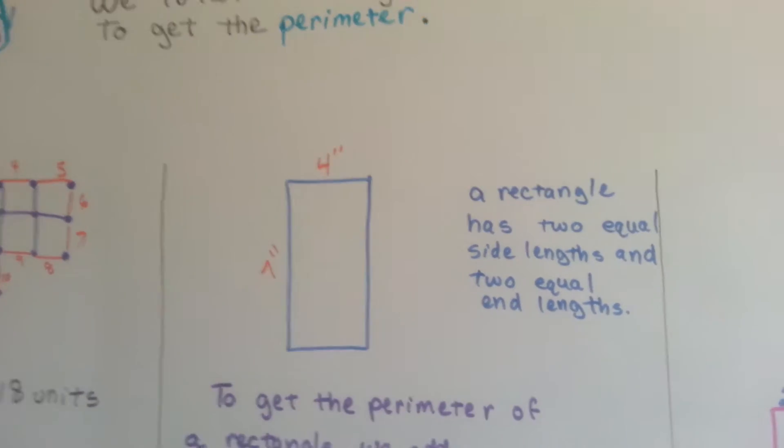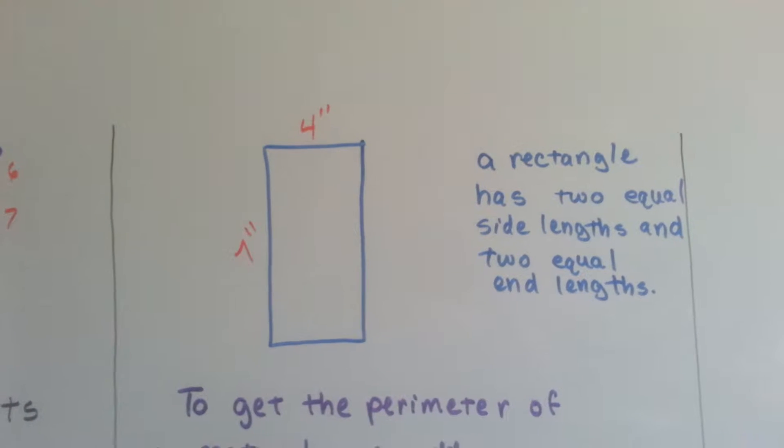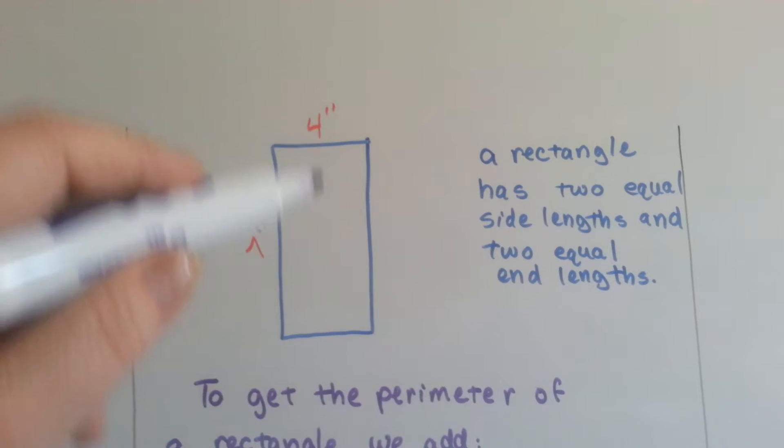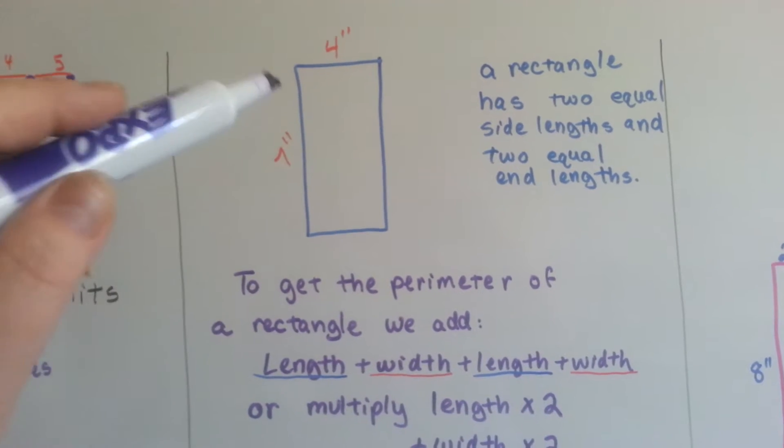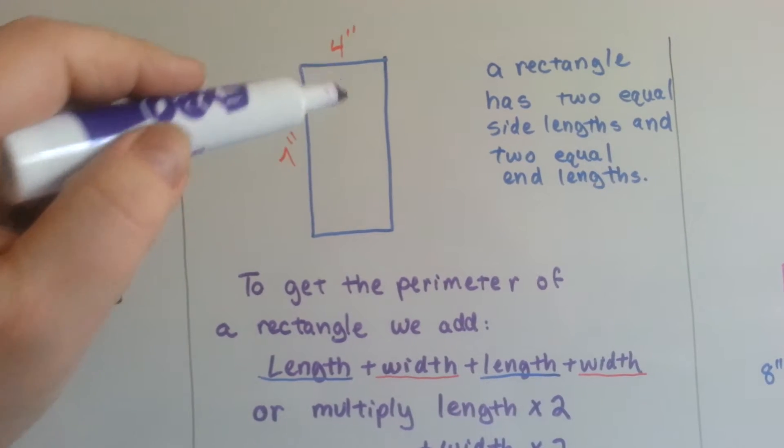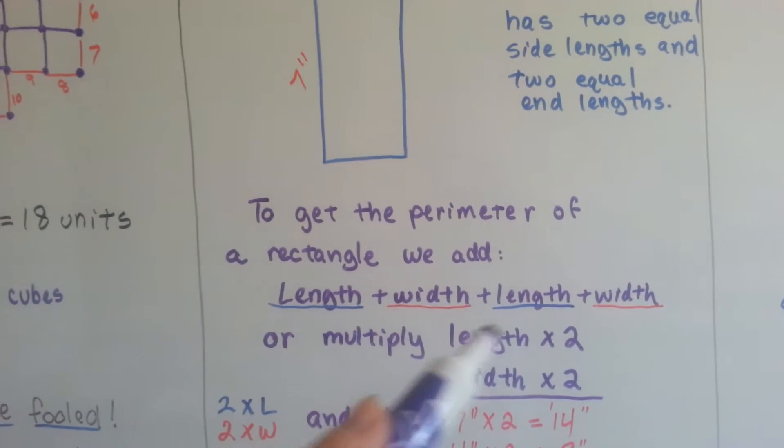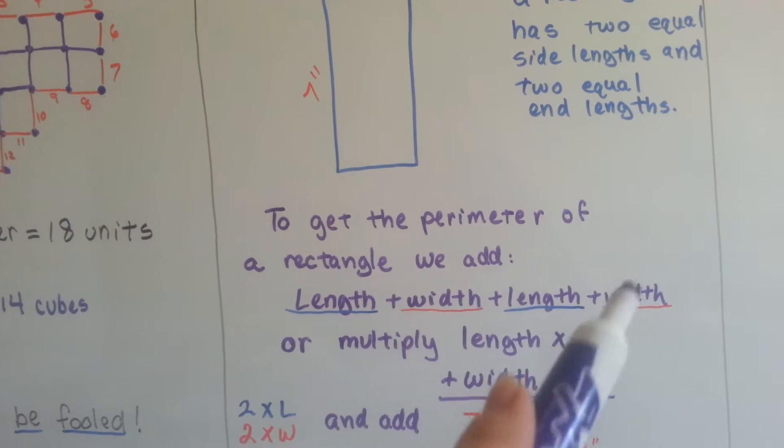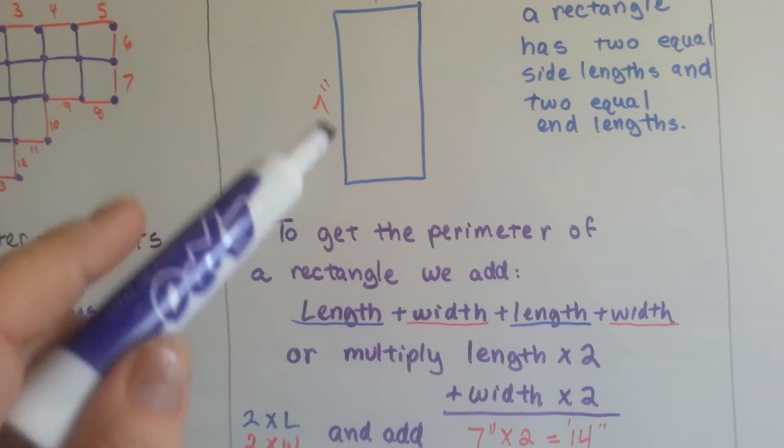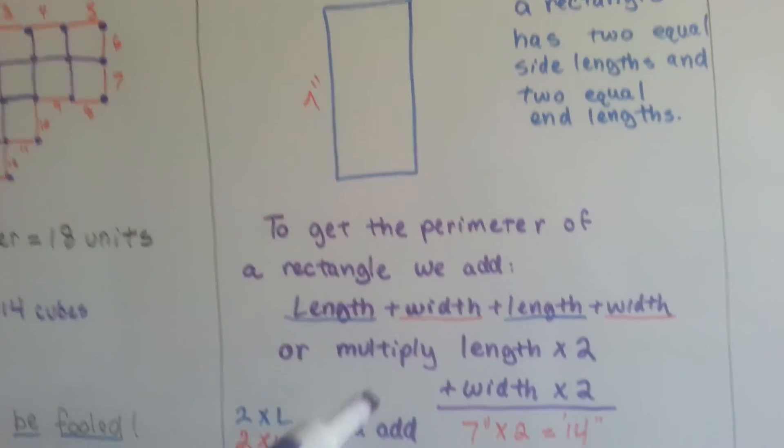So if we wanted to figure out the perimeter for this rectangle, it has 2 equal side lengths and 2 equal end lengths, widths. So to get the perimeter, we add length and the width and the length and the width. Another way of saying it is length times 2 and width times 2. See? 1, 2, 1, 2. So we could just multiply the 7 times 2 and add it to 4 times 2, right?